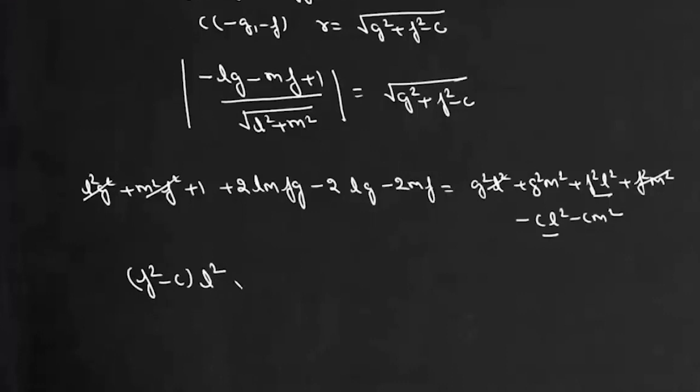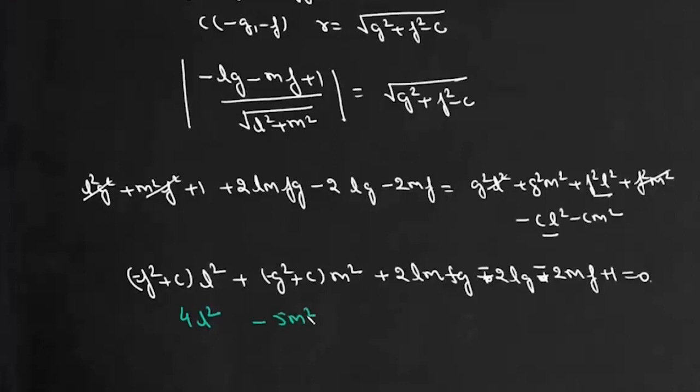We can rewrite this as (f² - c)l² + (g² - c)m² - 2lmgf + 2gl + 2mf - 1 = 0. We will change the sign of each term to make it plus 1, so we get (c - g²)l² + (c - f²)m² + 2lmgf - 2gl - 2mf + 1 = 0. We compare it with the given condition 4l² - 5m² + 6l + 1 = 0.